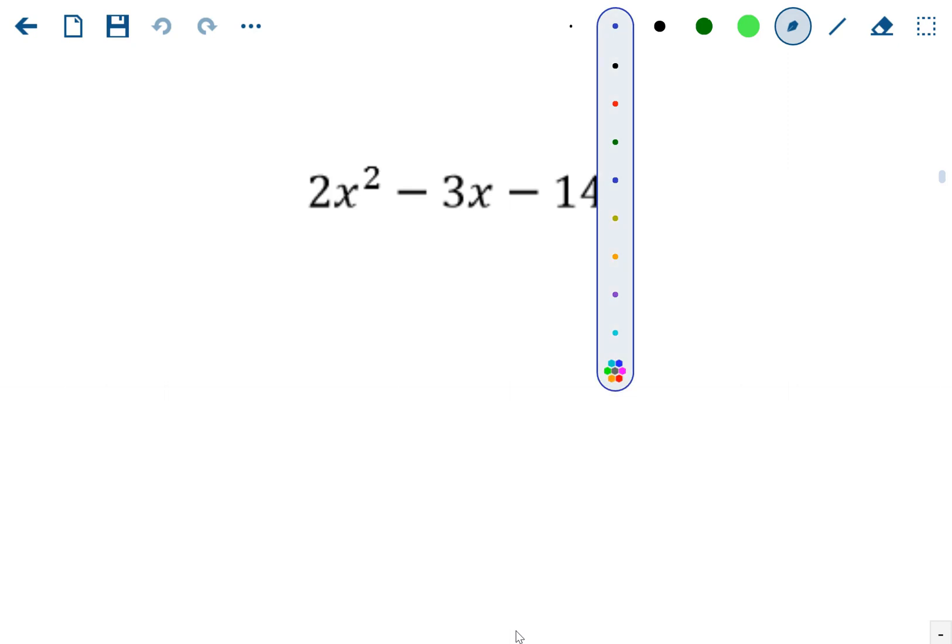So remember, first swing method is you're going to swing the a value, the leading coefficient, out from the front and you're going to swing it to the back. And when you swing it, you're going to multiply. So we're going to change it from 2x squared to just 1x squared minus 3x. So nothing changes except for that last term. It becomes 2 times negative 14, which is negative 28.